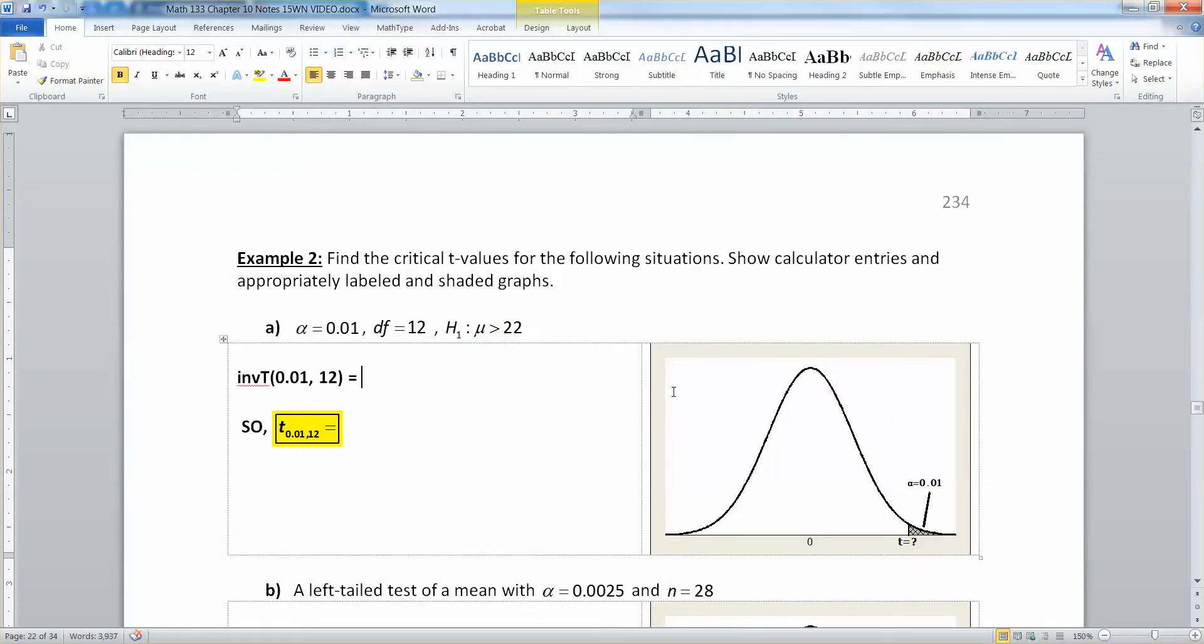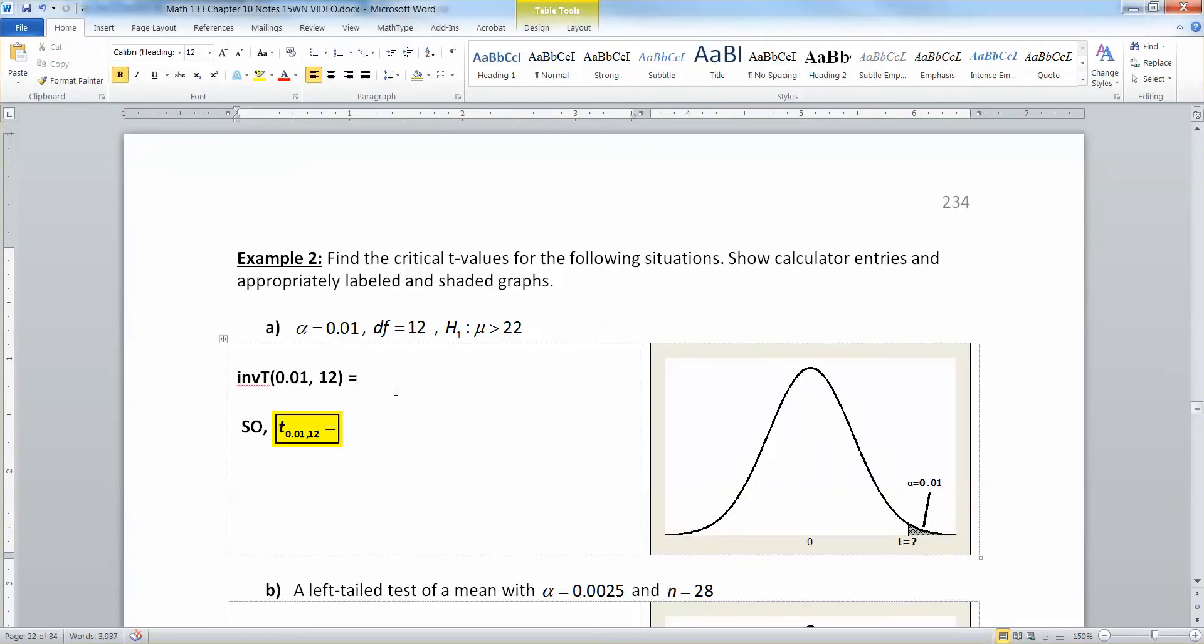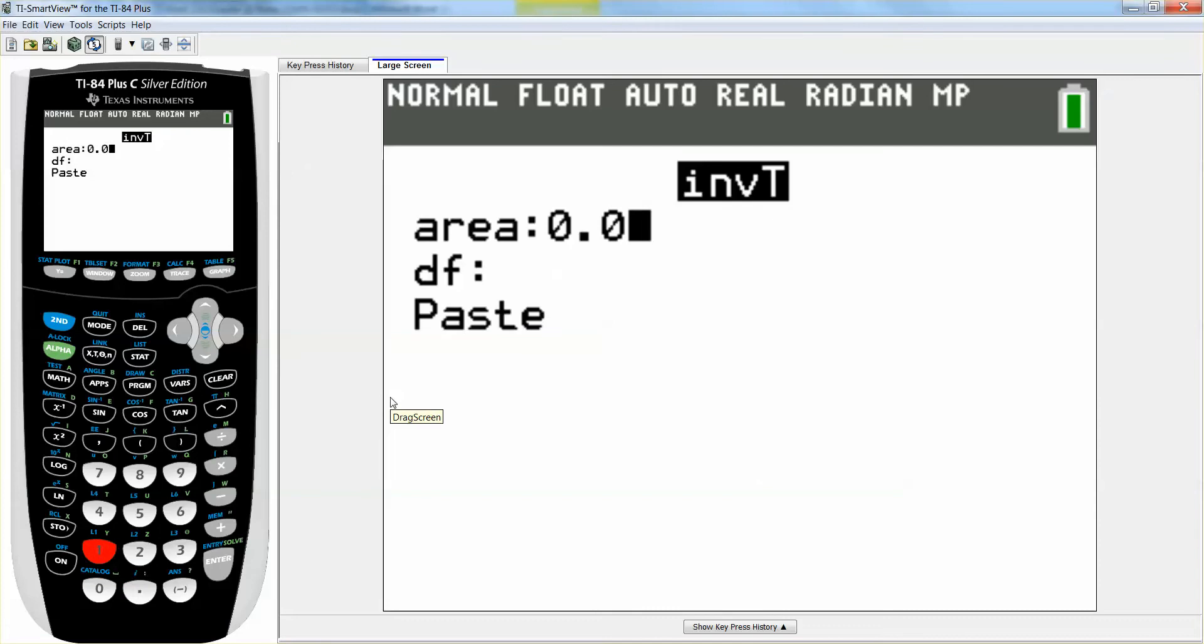Okay, so let's go here. We want to find there's alpha, 0.01. That's the right tail. And it's a positive value we're looking for. So let me grab inverse t, which is in the distribution menu. It's number 4. 0.01, and degrees of freedom is 12. 0.01, degrees of freedom 12, paste, enter.